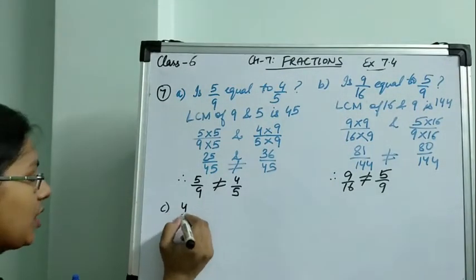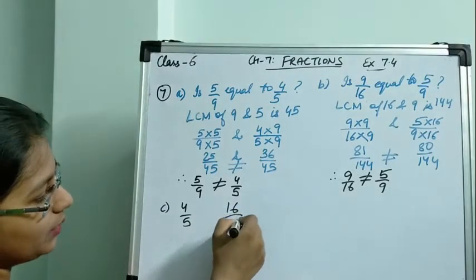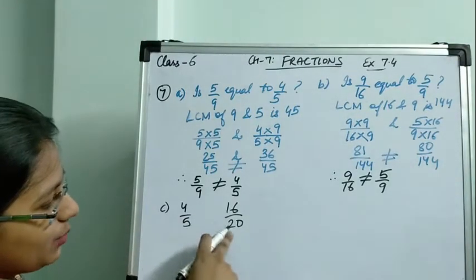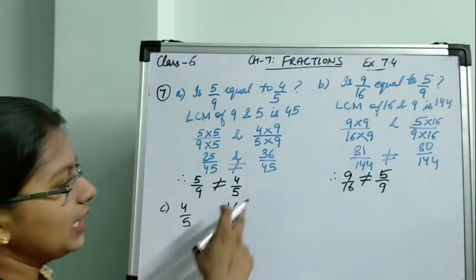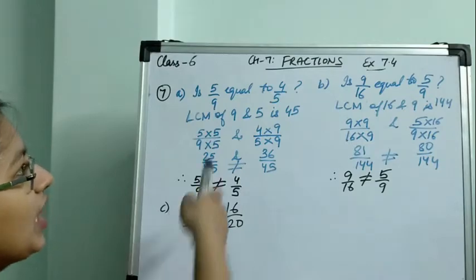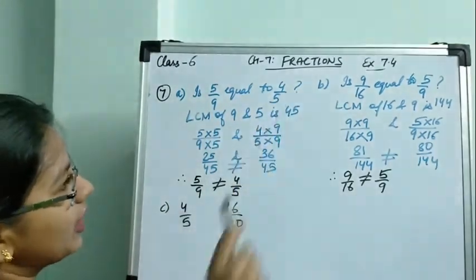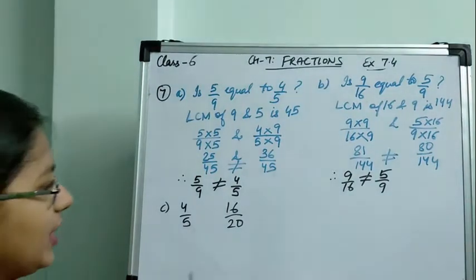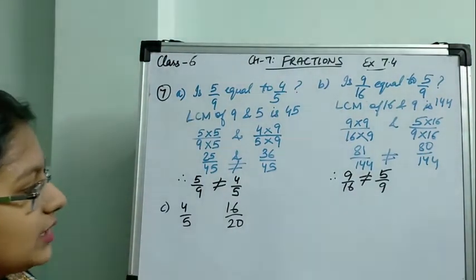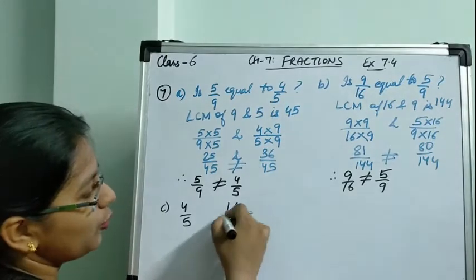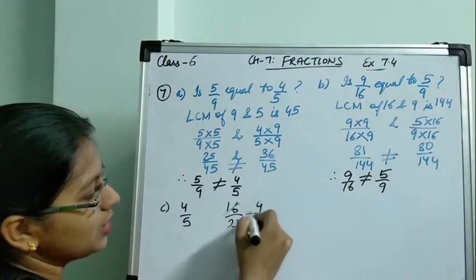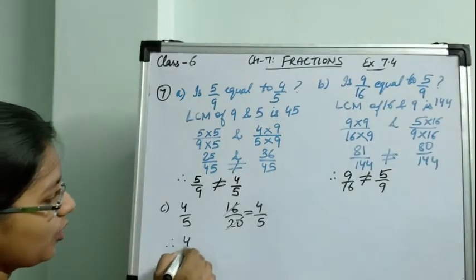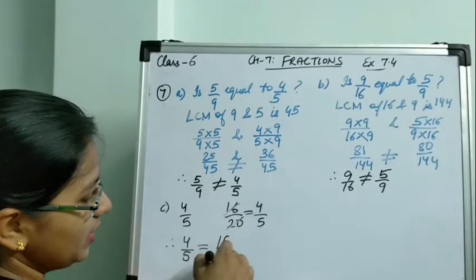For Part C: is 4 by 5 equal to 16 by 20? We can check by finding the LCM of 5 and 20, but one more thing I can see is that 16 by 20 can be simplified. Both 16 and 20 come in the table of 4: four 4s are 16 and four 5s are 20. On simplifying, I get 4 by 5. Therefore, 4 by 5 is equal to 16 by 20.